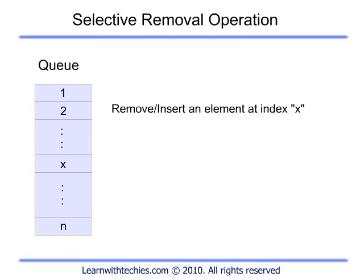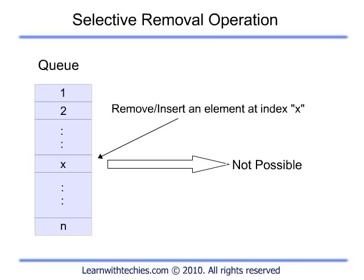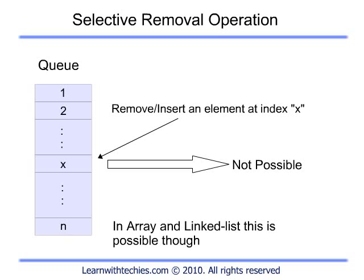Just as you can't do selective removal of an element of your choice from the stack, you can't do that in a queue either. Though selective removal is possible in data structures like array and linked list, where you can remove or insert an element at an index X. But that's not possible in a queue — elements are removed from the front only.